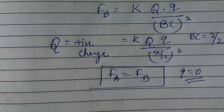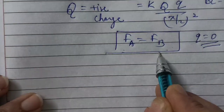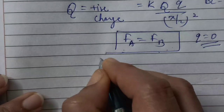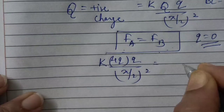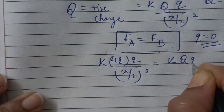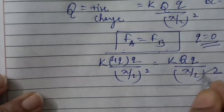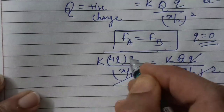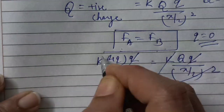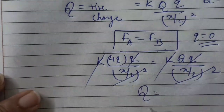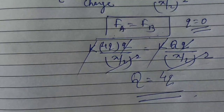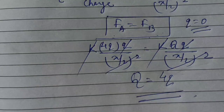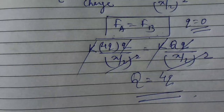Now we need to find the value of capital Q. Put the values into both formulas: k·4q·q / (x/2)² equals k·Q·q / (x/2)². The (x/2)² cancels on both sides, small q cancels, k cancels. So the value of capital Q comes out to be 4q. That means when capital Q is 4q and positive, small q experiences zero net force.